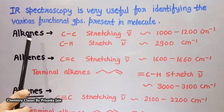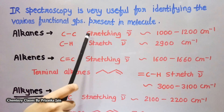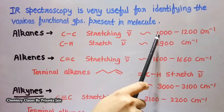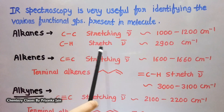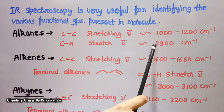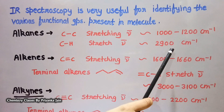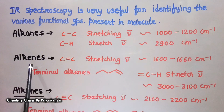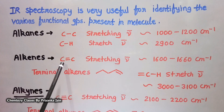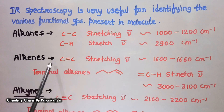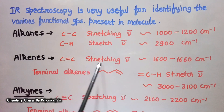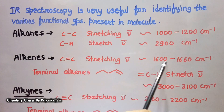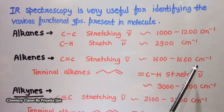For example, in alkanes, the carbon-carbon stretching frequency is near 1,000 to 1,200 cm⁻¹, while the C-H stretching frequency is near 2,900 cm⁻¹. For alkenes, there is a double bond present. As bond strength increases, frequency also increases, so the carbon-carbon stretching frequency for alkenes is near 1,600 cm⁻¹.